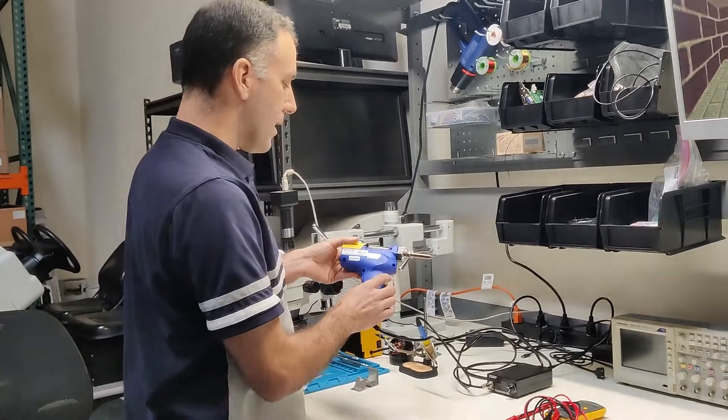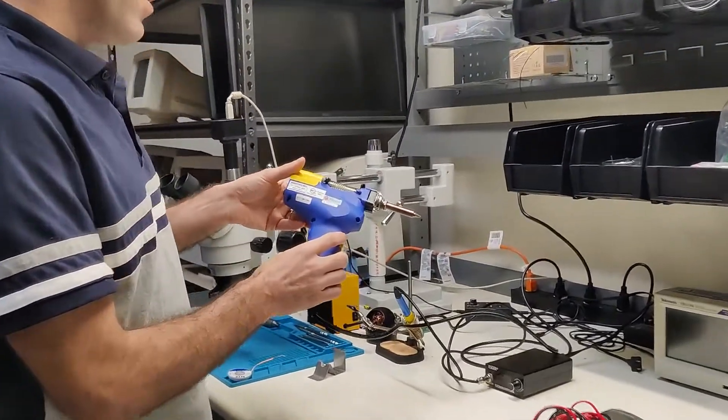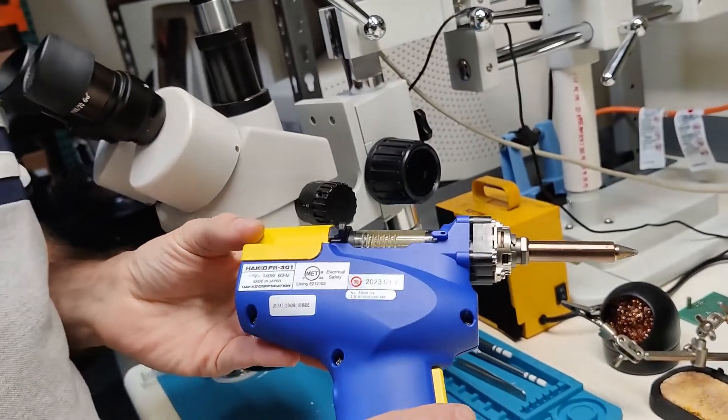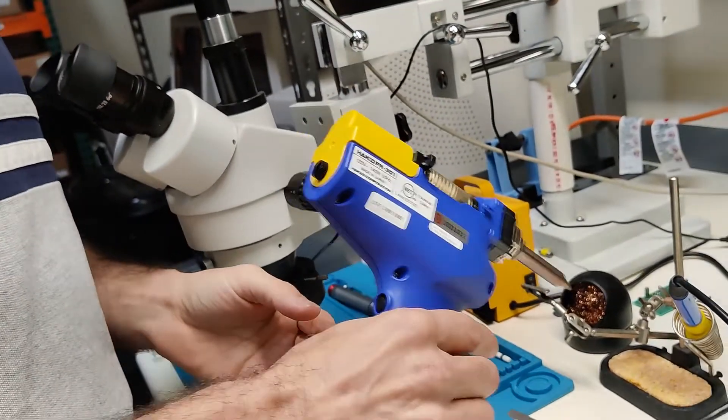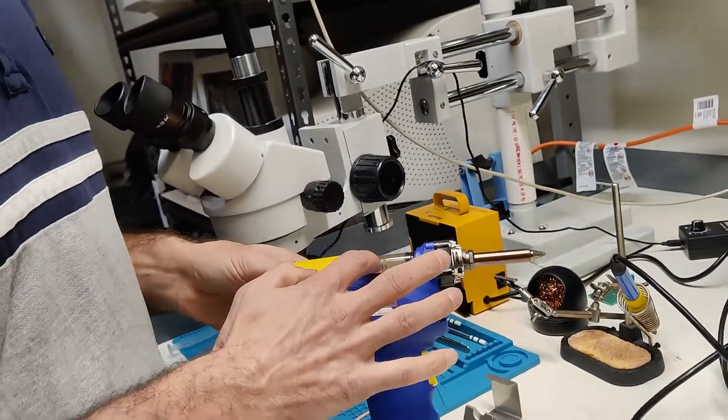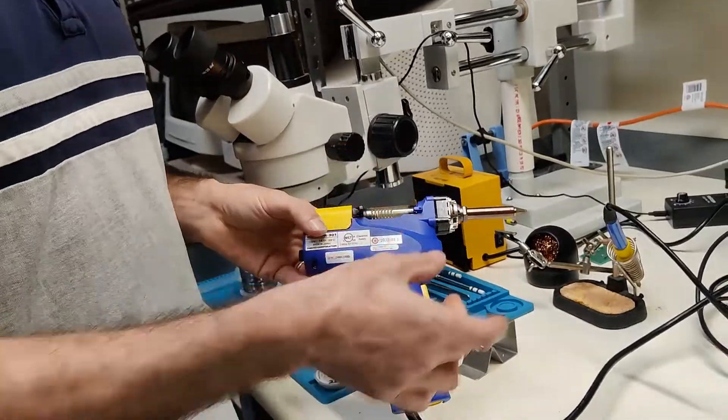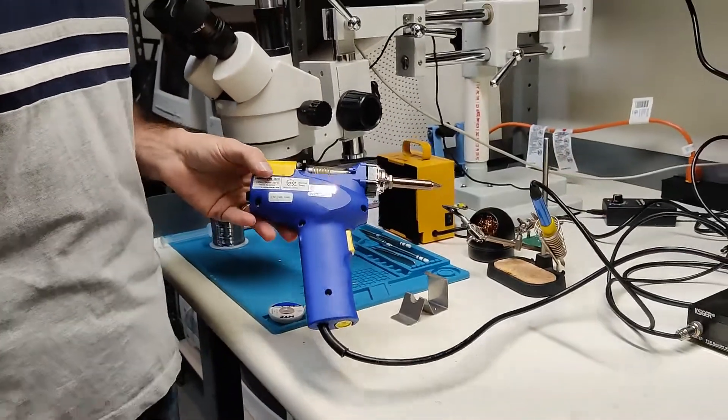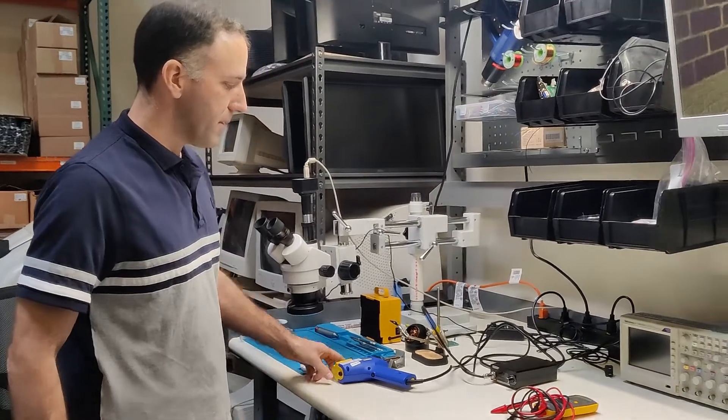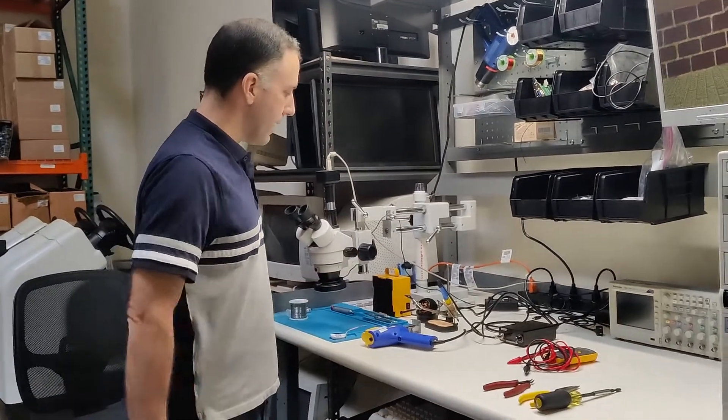So I just picked up this beauty. This is the Hakko FR-301 de-soldering gun. It is freaking awesome. It melts the solder. You put it right on the back of the capacitor. You pull the trigger and it sucks the solder right up into it. It makes a clean hole. The capacitors just come right out, even on 30, 40-year-old solder that I've encountered on some of these old motherboards. It's really great.